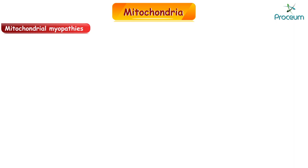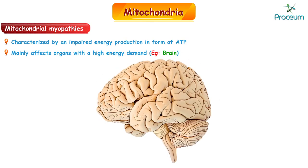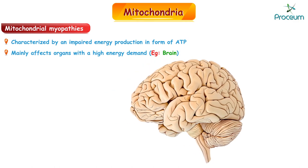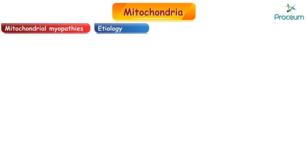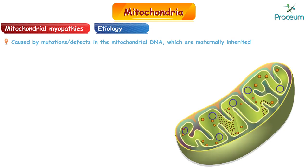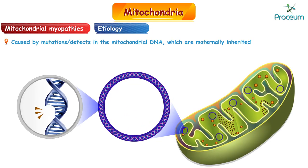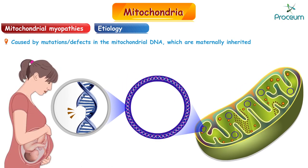Mitochondrial myopathies are a group of disorders characterized by impaired energy production in the form of ATP, mainly affecting organs with high energy demand such as the brain. These are extremely rare, with a prevalence of about 13 per 100,000. In terms of etiology, they are caused by mutations and/or defects in mitochondrial DNA, which are maternally inherited.